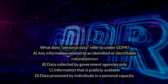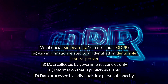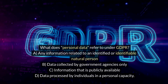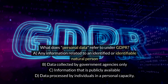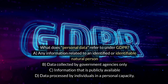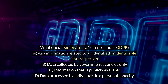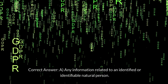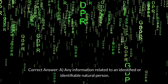What does personal data refer to under GDPR? A. Any information related to an identified or identifiable natural person. B. Data collected by government agencies only. C. Information that is publicly available. D. Data processed by individuals in a personal capacity. Correct answer: A. Any information related to an identified or identifiable natural person.